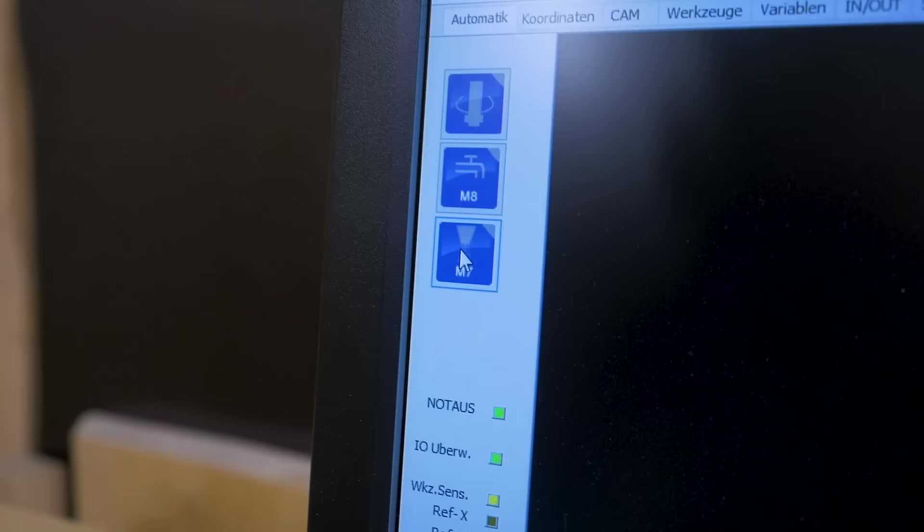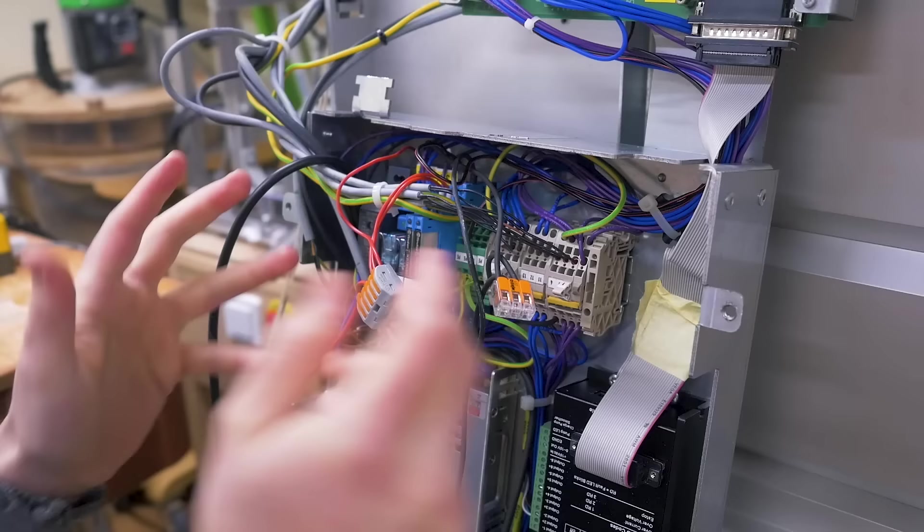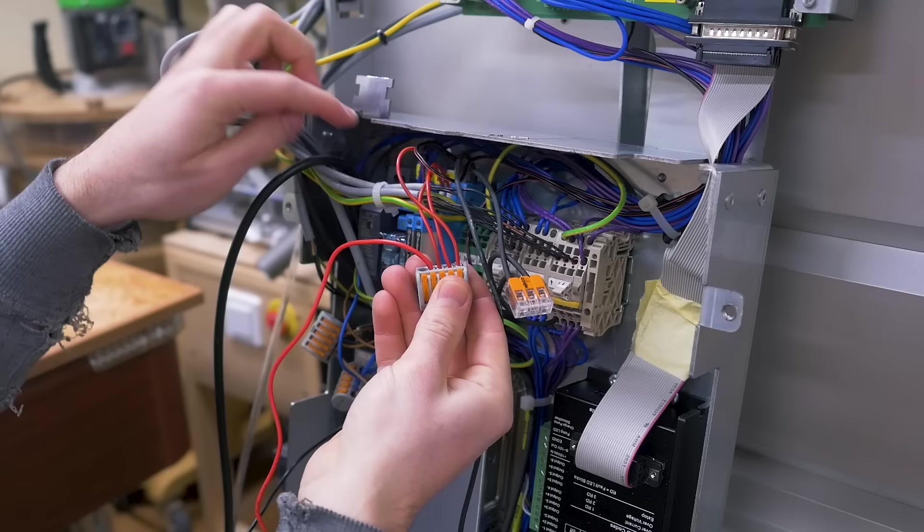Now the valve is wired up. And I've set up the machine for testing. Just connected the controller, and it's already on. And my mouse cursor is on the M7 button, which will control the valve. So now when I click with the mouse, this should also click. And it does. Perfect.